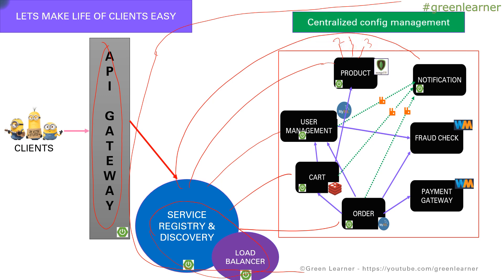The final part introduced here is centralized configuration and management. Each of these individual services is going to have some configuration, and we do not want to change anything in the individual service. We want to keep a centralized Git repository where we can make changes and have them reflected across each individual service. For that we are going to use a centralized configuration management service, which is a different service within Spring Boot itself.